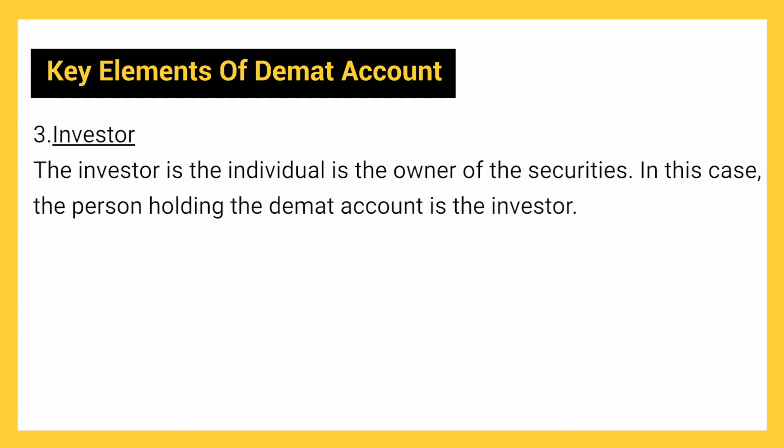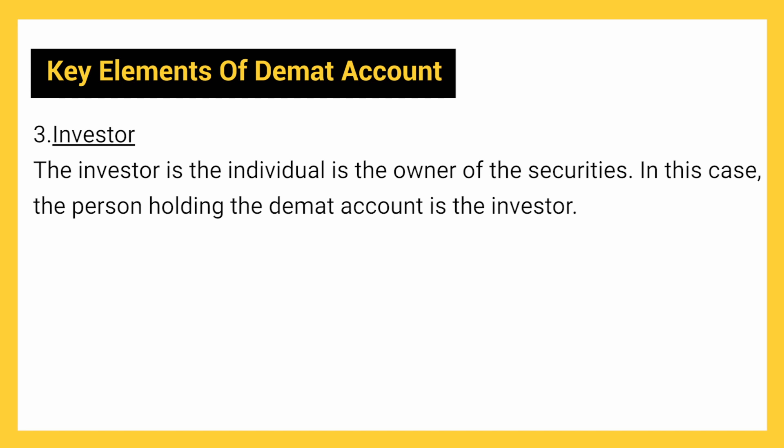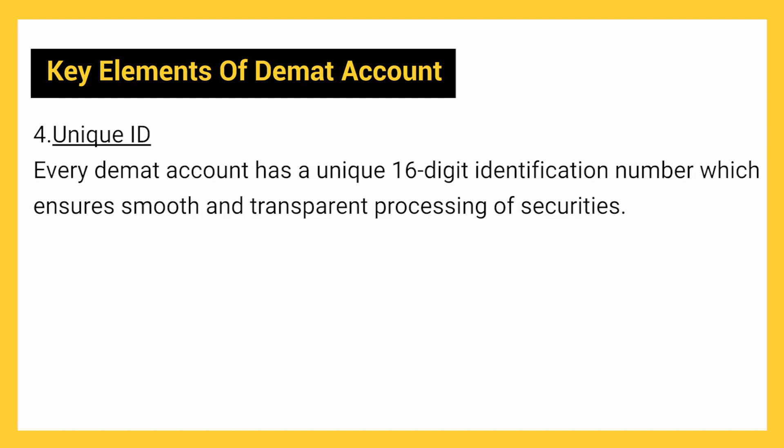The third key element is Investor: the investor is the individual who is the owner of the securities — in this case, the person holding the DMAT account. The fourth and last element is Unique ID: every DMAT account has a unique 16-digit identification number which ensures smooth and transparent processing of securities.